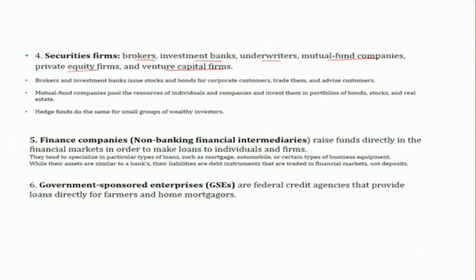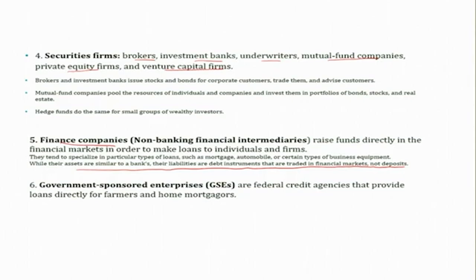Another group of financial intermediaries is finance companies, also called non-banking financial intermediaries. They raise funds directly in the financial markets in order to make loans to individuals and firms, and tend to specialize in particular types of loans such as mortgages, automobile loans, and certain business equipment financing. While their assets are similar to banks, their liabilities are debt instruments traded in financial markets — not deposits. Importantly, these finance companies do not come under the direct purview of the central banking system, and deposits are not their prime source of raising capital.